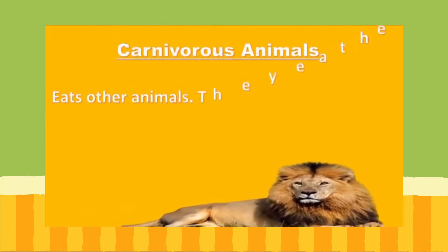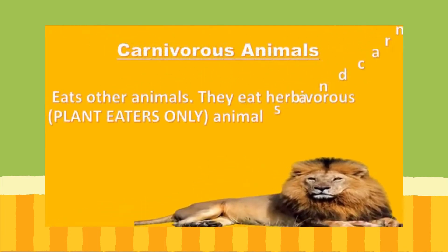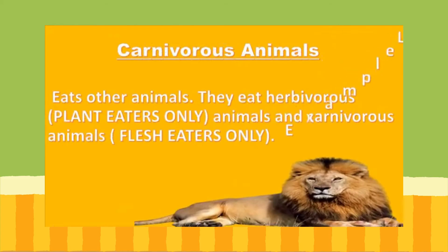Next, we are looking at carnivores. There are two different kinds of carnivore animals. You have the first set who eat other animals that only consume plants. Then you have the other animals who only eat fleshy food.